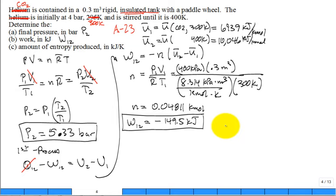The answer for Part B is W₁₂ = −149.5 kJ. It's negative because it's work into the system, not work out — the paddle wheel is stirring the CO2.